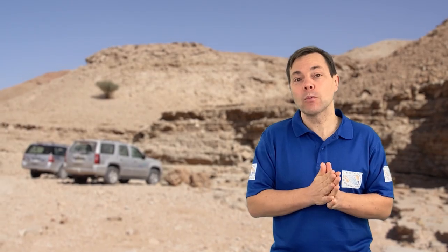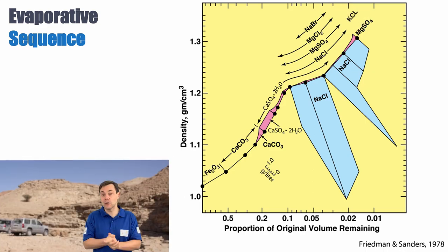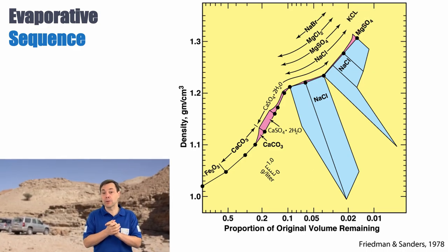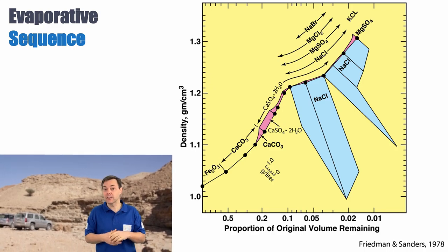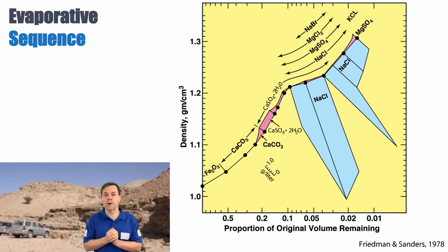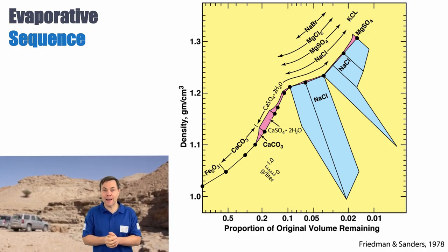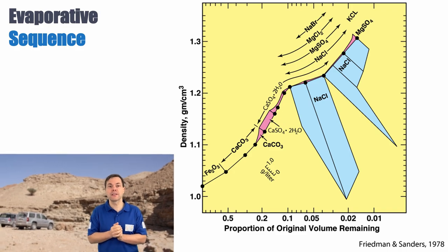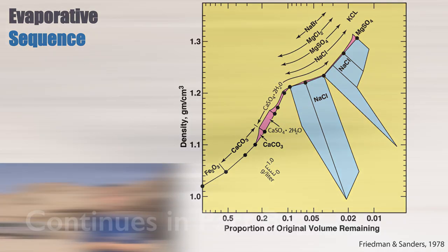At very high degrees of evaporation, you can get more exotic minerals like magnesium sulfate, or sylvite — a KCl precipitate — which is a salt used for its potassium content, for instance as a source for fertilizers, among a number of other species.